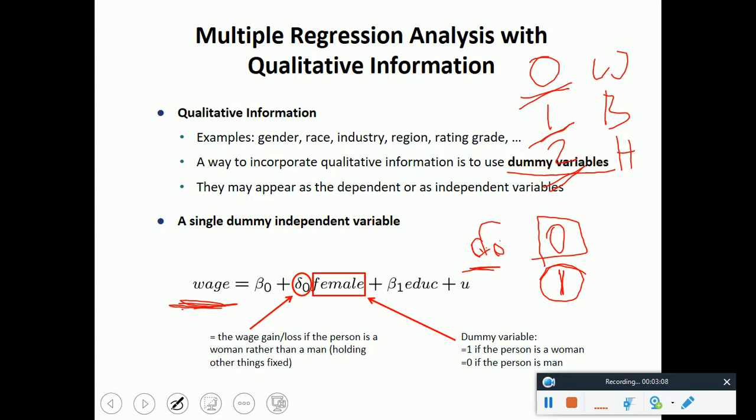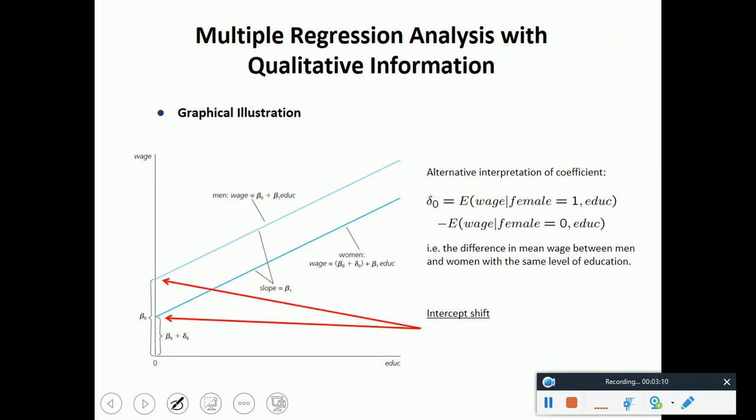If you see from a graphical illustration of the previous example, when we have estimated the man's wage, they have slightly a higher wage compared to the females. There is a difference. You can clearly see the difference if we observe graphically. And there is an intercept shift as well.